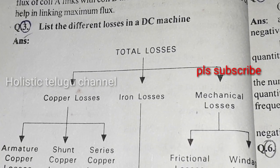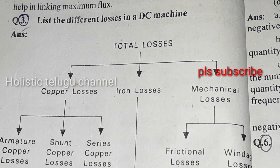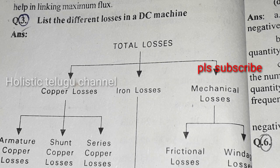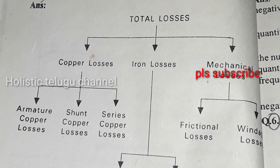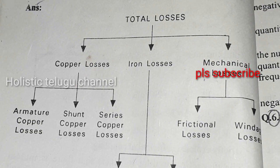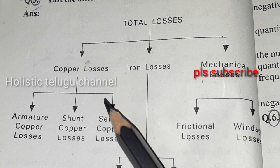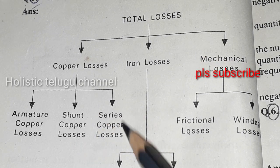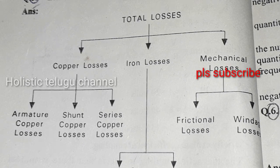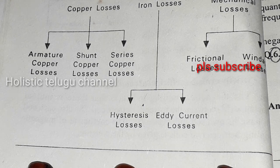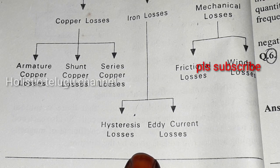Next question: list the different losses in DC machines. Total losses are divided into: copper losses (armature copper losses, shunt copper losses, series copper losses), iron losses (hysteresis losses, eddy current losses), and mechanical losses (frictional losses and windage losses).